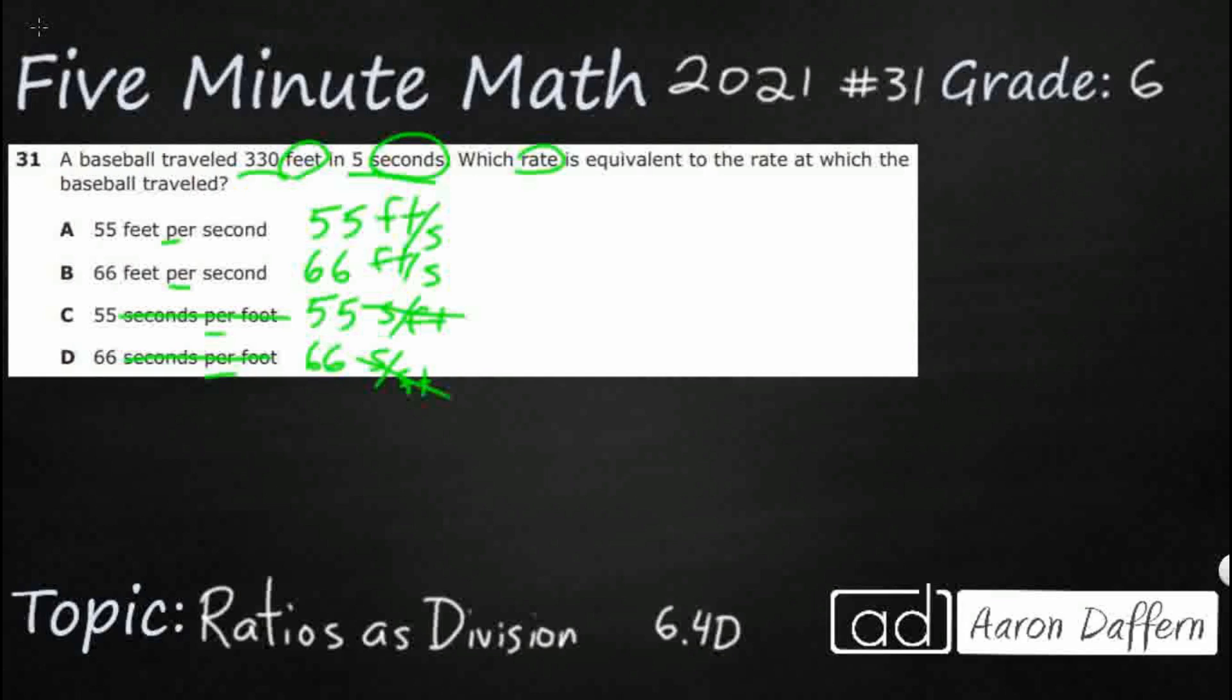And how do we figure out this 330 feet for five seconds? Well, if you see it as a fraction, you know that means we are going to have a division problem. So yes, let's go ahead and divide. We're going to take five, make that our divisor. We're going to take 330, make that our dividend. And that is going to get us our feet per seconds that we're looking for.